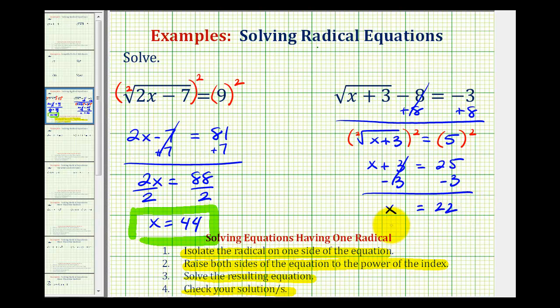And now to check the solution, we'll substitute 22 for x into the original equation. So we'd have the square root of 22 plus 3, that's 25. So the square root of 25 minus 8 equals negative 3. Well, the square root of 25 would be 5. 5 minus 8 is equal to negative 3. So that does check, and therefore our solution is x equals 22.